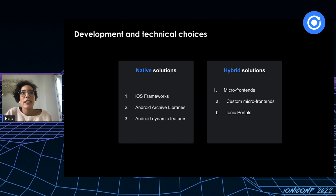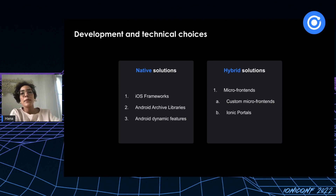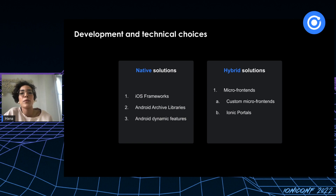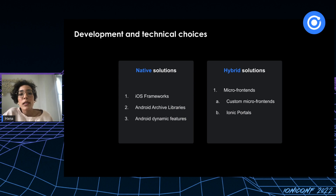Now that we have that cleared up, let's talk about technical choices and development requirements. To build a super app today, we have several approaches: we can build using native solutions like iOS frameworks and Android archives, which mobile developers have used for many years. We can also use Android dynamic features for native solutions, or hybrid solutions leveraging web techniques like micro frontends.